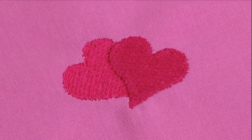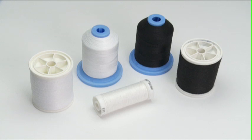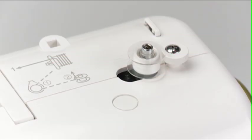Best embroidery results will be obtained by using bobbin fill thread in the bobbin. Bobbin fill is lighter in weight than all-purpose thread. This not only helps minimize density on the back of the embroidery, but it allows more thread to be wound onto the bobbin.